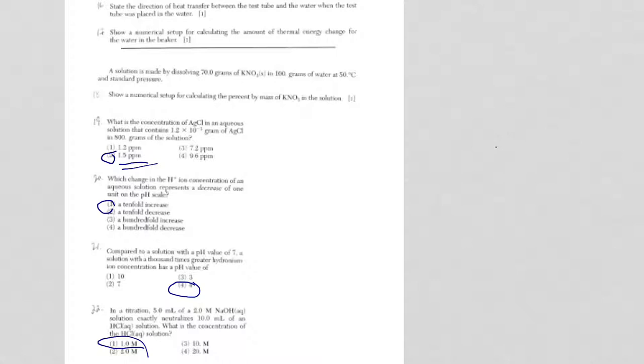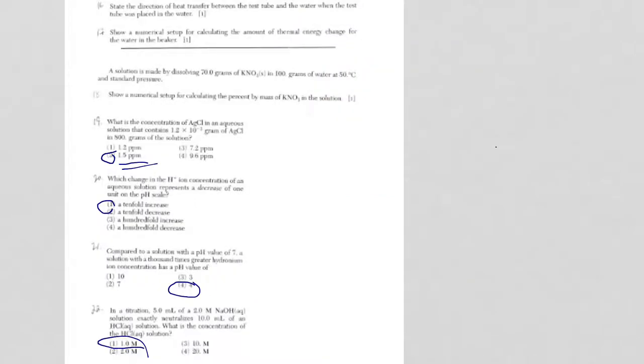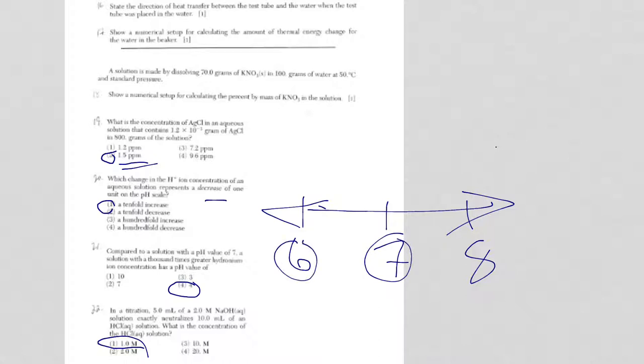All right, now for questions 20 and 21, there is no formula or equation on reference table T. When I'm dealing with pH, the pH scale, everybody knows neutral is 7. Less than 7 is acidic, greater than 7 is basic. But what happens when you move up and down the scale? Well, in this case, if we decrease by 1 pH unit, going from 7 to 6, we actually are going from neutral to acidic. So what's happening to the hydrogen ion concentration is going to increase by a factor of 10.